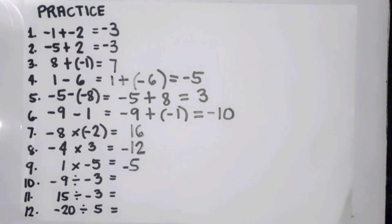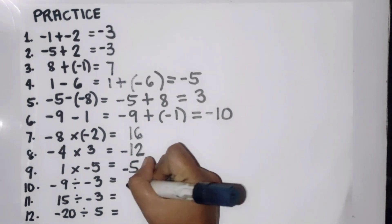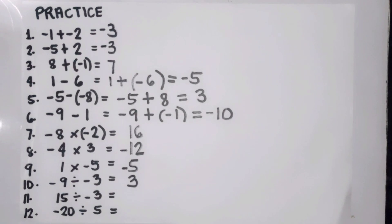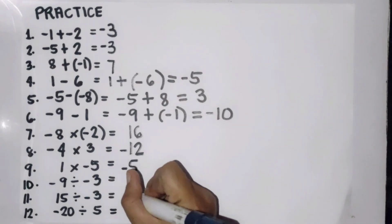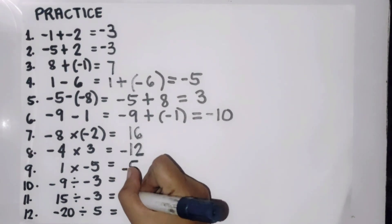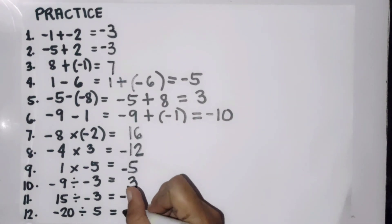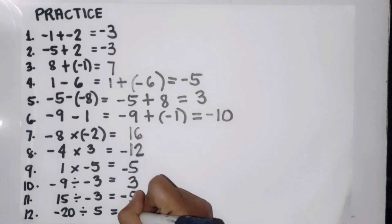Number ten: negative nine divided by negative three. Nine divided by three is three — since both are negative, the answer is positive three. Number eleven: fifteen divided by negative three. Fifteen divided by three is five — different signs, so the answer is negative five. Number twelve (last item): negative twenty divided by five. Twenty divided by five is four — different signs, so the answer is negative four.